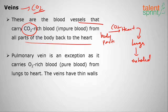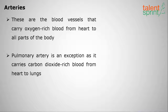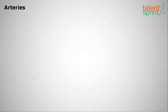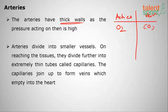The exception is the pulmonary vein, which carries O2-rich blood from the lungs to the heart. Veins generally have thin walls. Arteries, the opposite of veins, carry O2-rich blood. The exception is the pulmonary artery, which carries CO2-rich blood from the heart to the lungs. Arteries have thick walls.